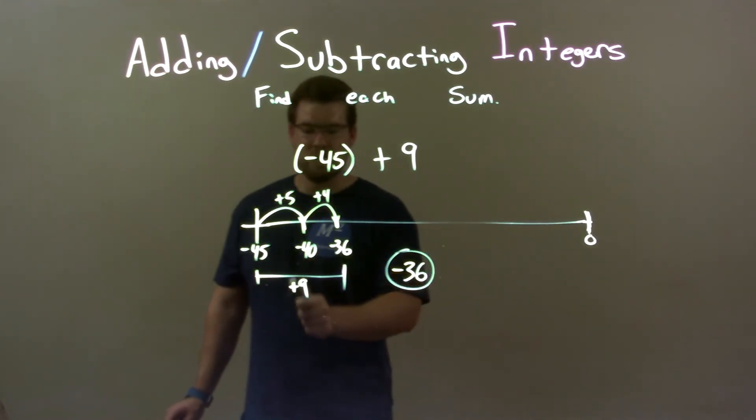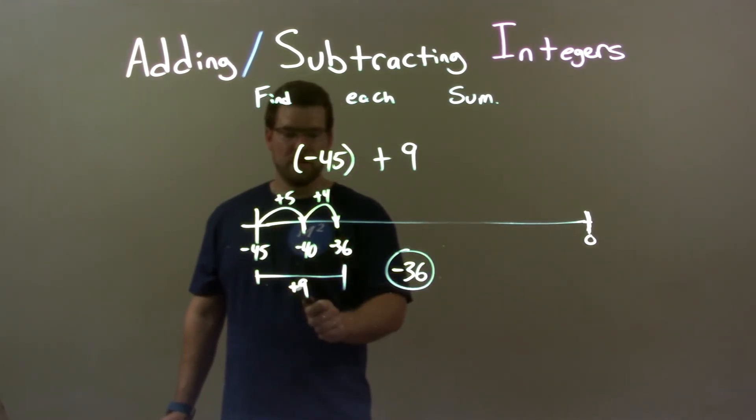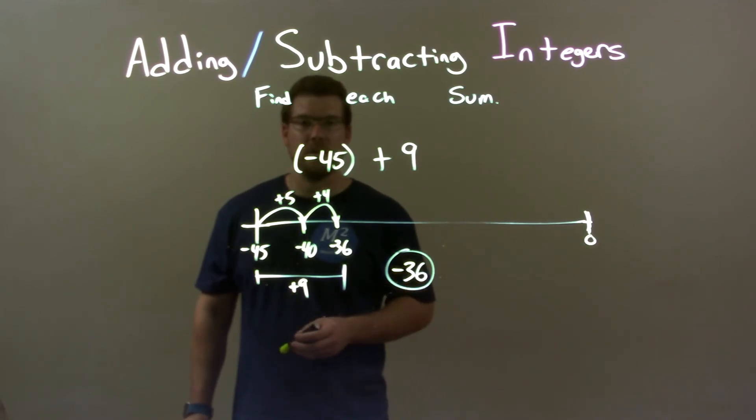Those two numbers add easily to 9, right? 5 plus 4 is 9. So our final answer here is just negative 36.